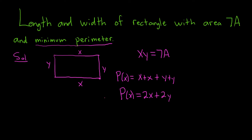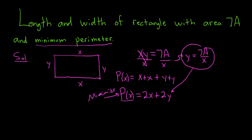We want to minimize this function. But we have both x and y here, so we need to eliminate y. We solve xy = 7a for y by dividing by x, giving y = 7a/x. Substituting that in: p of x equals 2x plus 2 times 7a over x. Now we can minimize this using calculus.